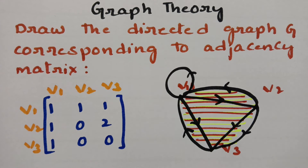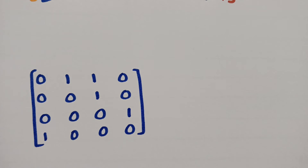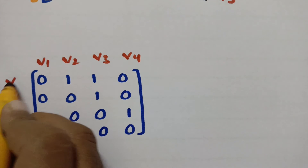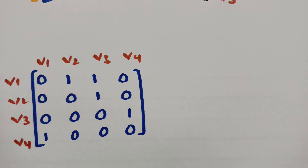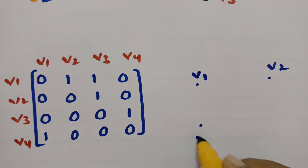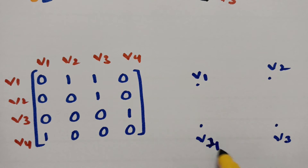Please concentrate — it is very easy. Now it is a 4 by 4 matrix, so I am taking four vertices: V1, V2, V3, V4. Here also this is V1, V2, V3, and V4. Now I have to plot four vertices.